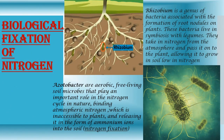Now let's learn about biological fixation of nitrogen. Biological fixation is carried out by two different types of microorganisms: Rhizobium and Azotobacter. Rhizobium is a genus of bacteria associated with the formation of root nodules on plants. These bacteria live in symbiosis with legumes, taking in nitrogen from the atmosphere and passing it on to the plant, allowing it to grow in soil low in nitrogen.